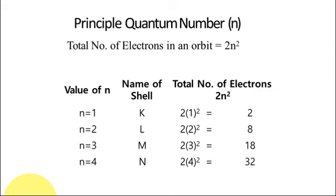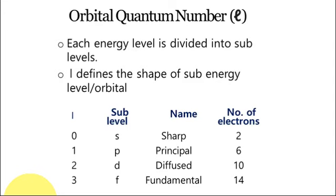This formula 2n² is well known. Moving to the next slide: the orbital quantum number L. Each energy level is divided into sub-levels. L is the orbital quantum number, which defines the shape of the sub-energy level.